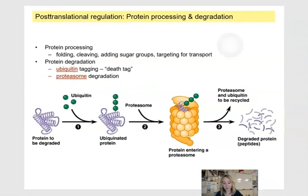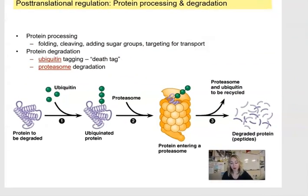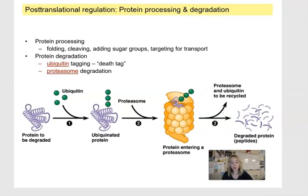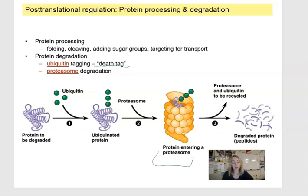The last piece of information here is post-translational modification. This is where you produce a protein, but that protein is no longer needed, so we degrade it. We tag the protein with ubiquitin — a death tag — and then it is fed into a proteasome, an enzyme that degrades it into peptides or individual amino acids, some of which can be recycled.